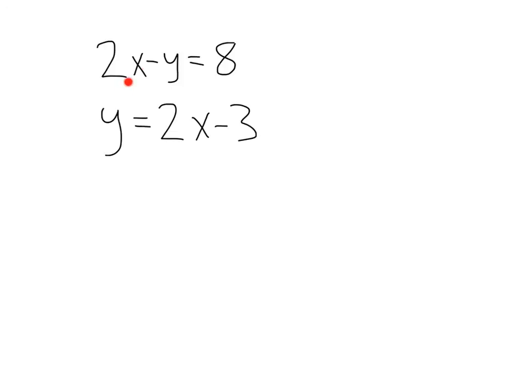Moving on. We've got 2x minus y equals 8, and y equals 2x minus 3. Again, it looks like we know what y is equal to, so let's take this and sub it right in for y in equation number 1.